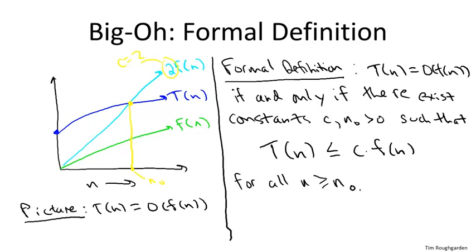So that's the formal definition. The way to prove that something's big O of F of n, you exhibit these two constants, C and n naught, and it better be the case that for all n at least n naught, C times F of n upper bounds T of n.